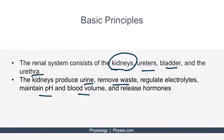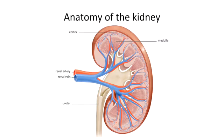Before we jump into the details of all of these functions, let's take a moment to review some of the basic anatomy. This is figure 4.1 from your text, and here we're looking at some of the normal anatomy of the kidney. The kidney consists of a cortex and a medulla. The cortex is shown here, and the medulla is the inner or middle portion right here.